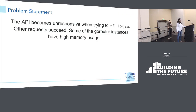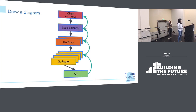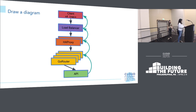The problem statement for this case: the API becomes unresponsive when trying to cf login. Other requests succeed, and some of the go router instances have high memory usage. Even though we were told the go router has high memory usage, let's remember that there are several components the cf login request needs to travel through. Requests travel into the load balancer, through one of the HA proxy instances, into one of the go routers, before finally making it to the API — and then the response needs to go back through all these components to get a response to the client. Now we can start to gather information.